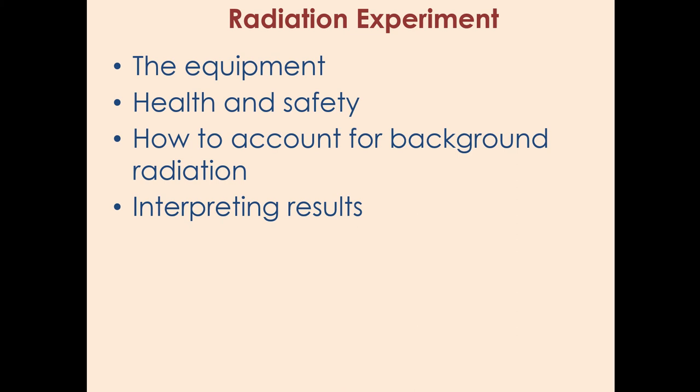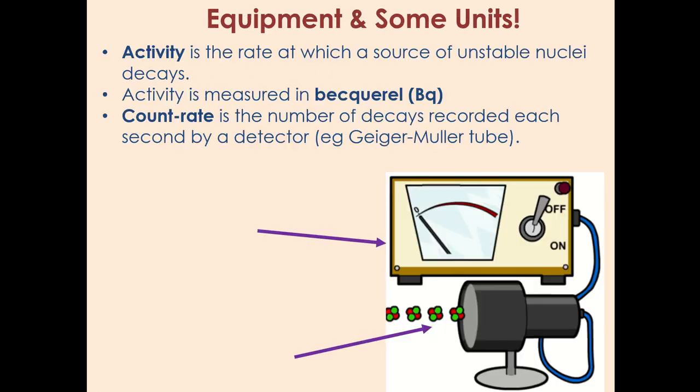What we need to know then now that we've talked a bit about dangers and a bit about background is about this experiment. As part of that experiment you need to be able to explain the equipment you use, health and safety considerations, how to account for background, and interpreting results. So first of all we need to think a little bit about the units.